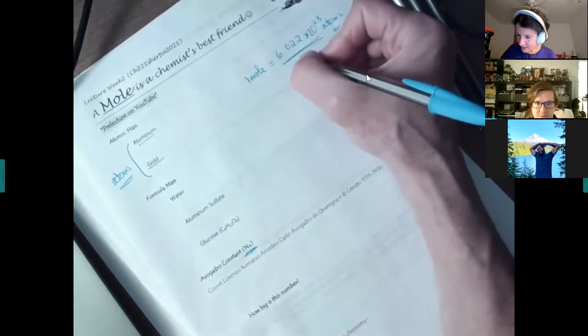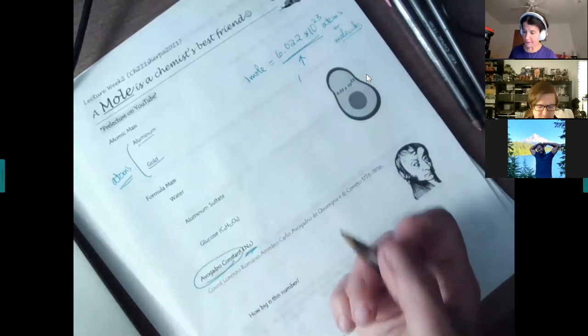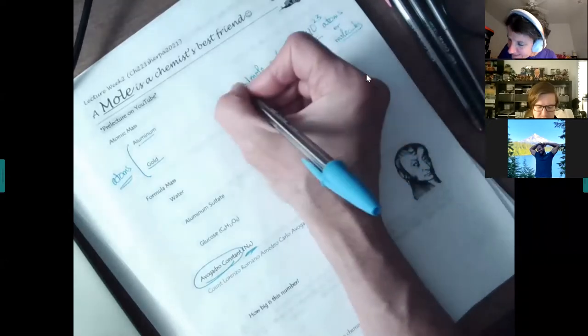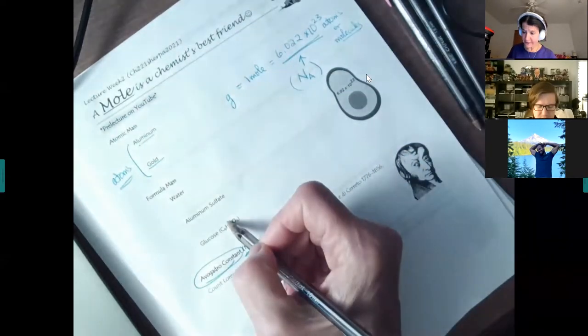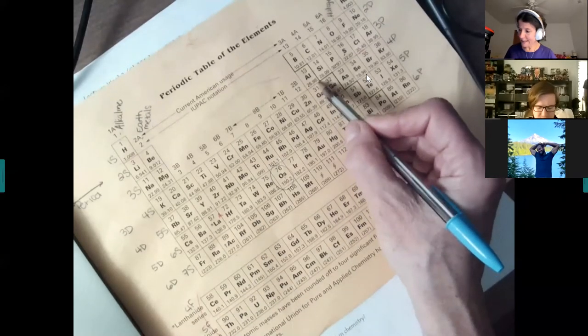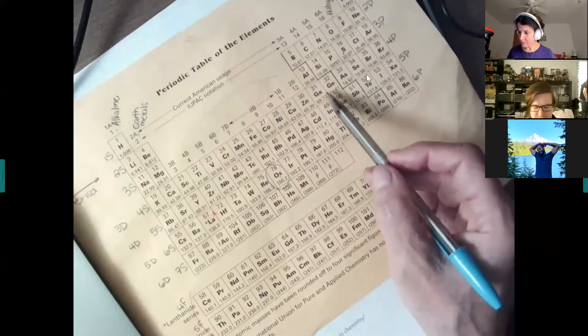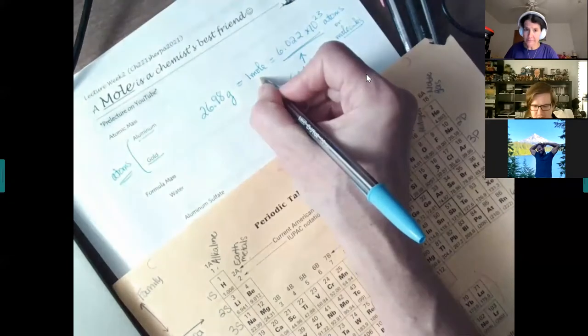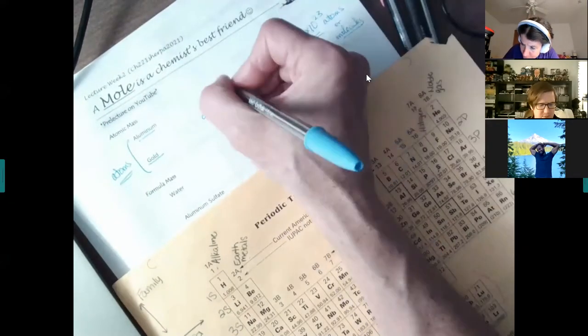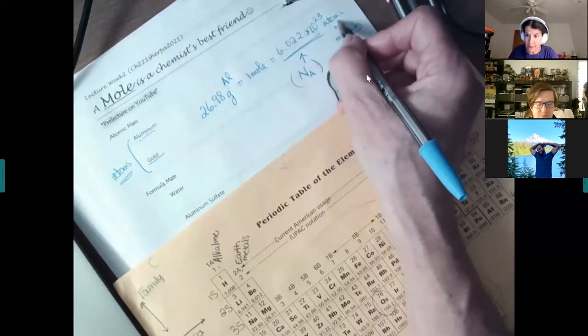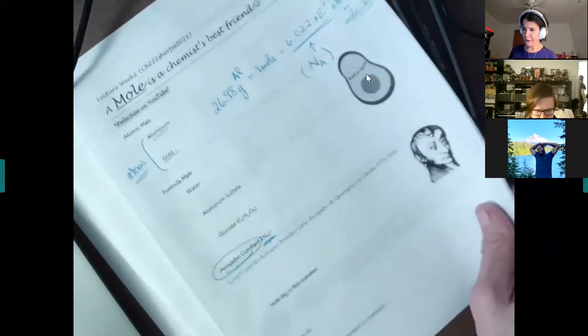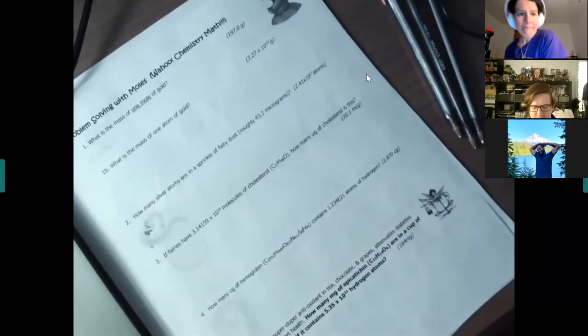This is called Avogadro's number. You will see me eventually just symbolize it like that rather than writing it out as we get through the notes today. It is the mass of the elements or the compound. If we looked at aluminum on the periodic table, we're going to go with a four-sig-fig rule today, 26.98. That's what this number means, that average atomic mass on your periodic table.